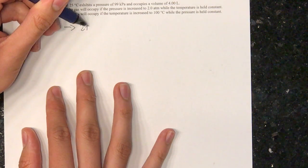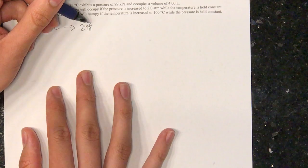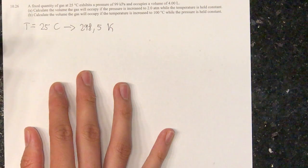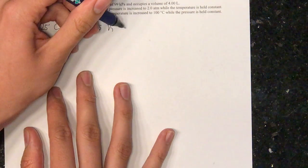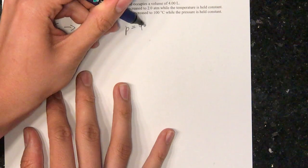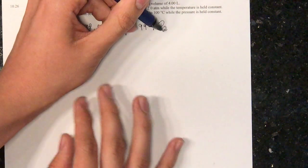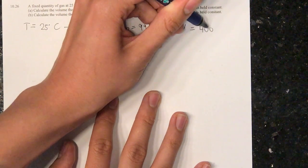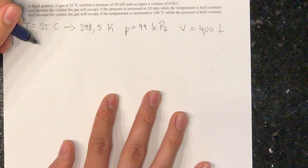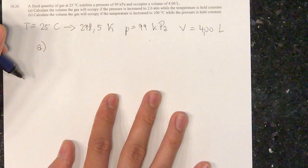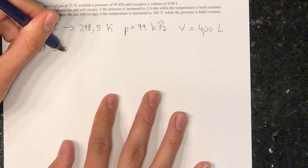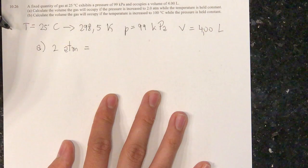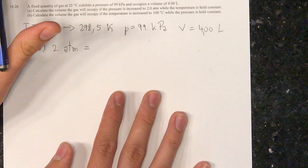That's approximately 298.5 Kelvin and I'm also going to write the other information we've got. Pressure is equal to 99 kilopascals and the volume is equal to 4 liters. For Part A, we have 2 ATMs and ATMs is another type of unit for pressure.